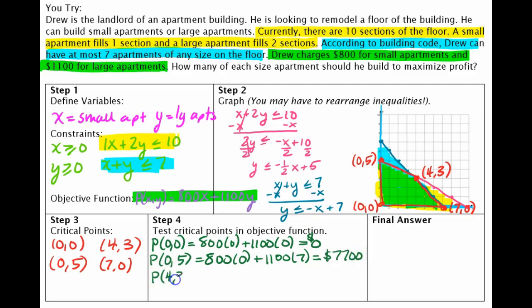If I rented out four small apartments and three large apartments, it would give me a total of $6,500. And then last but not least, seven small apartments and zero large apartments. So that would be 800 times seven and 1,100 times zero would give me a profit of 5,600.